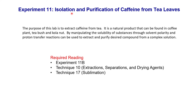This week we are doing isolation and purification of caffeine from tea leaves. Caffeine is a natural product that can be found in the coffee plant, tea bush, and cola nut. By manipulating the solubility of substances through solvent polarity and proton transfer reactions, we can extract and purify the desired compound — caffeine — from a complex solution.